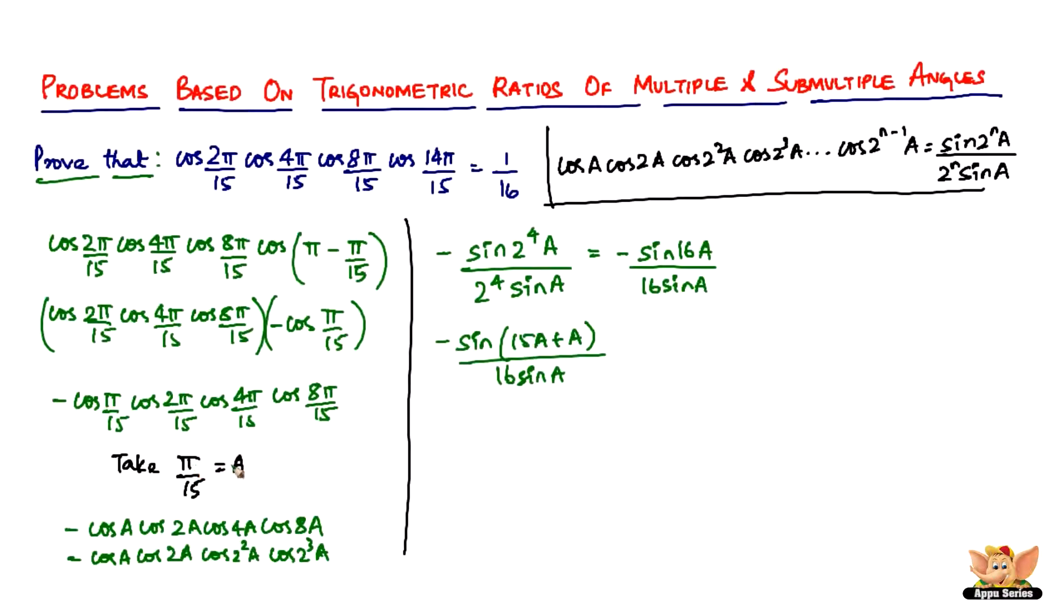So we have taken that π by 15 equals a, therefore π becomes equal to 15a, so it becomes minus sine of π plus a divided by 16 sine a. And sine of π plus a is nothing but 180 plus theta, it is in the third quadrant, belongs to sine, so therefore it is negative. So it's already a negative, so it's going to be negative of negative sine, because 180 doesn't change, so sine a.